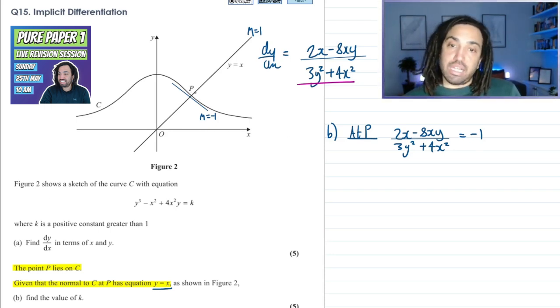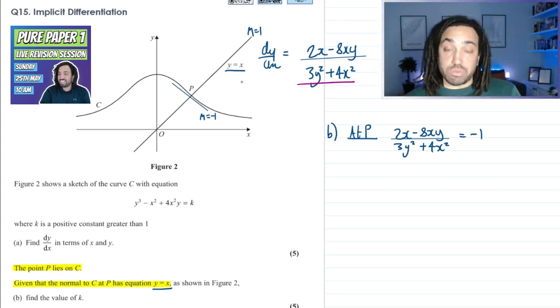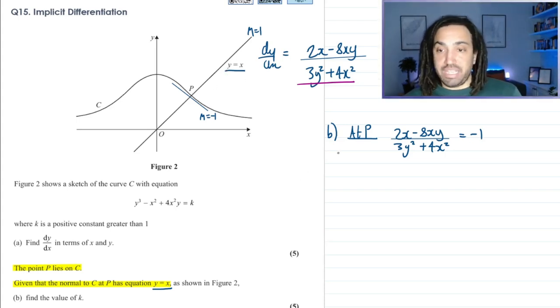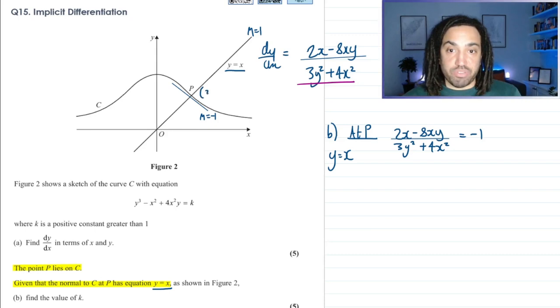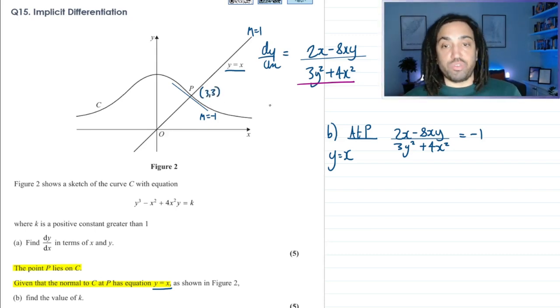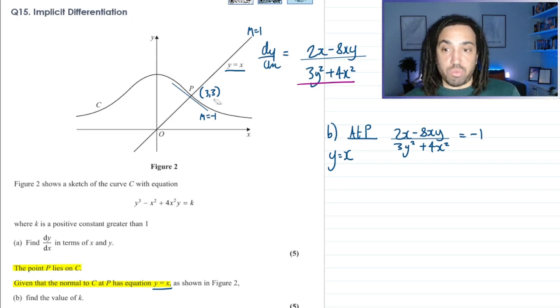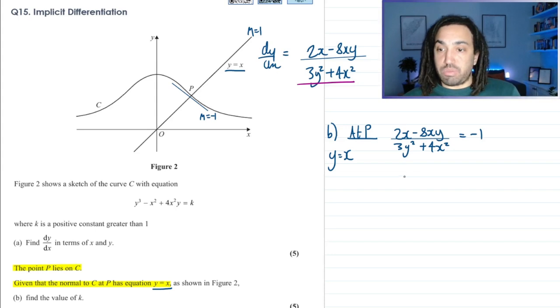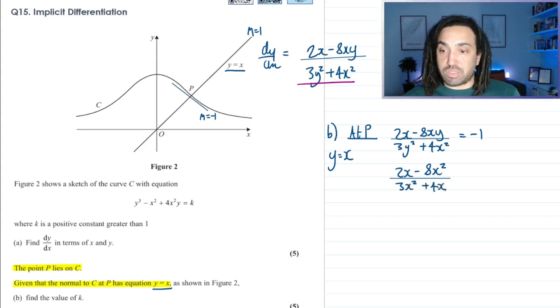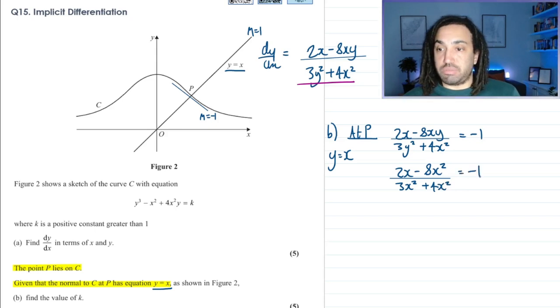So we can say that 2x minus 8xy over 3y squared plus 4x squared should equal minus 1. Okay, what else do we know at p? Well, at p, it's also on the line y equals x, so that means that at p, the y coordinate equals the x coordinate. So whatever p is, it could be 3, 3 or 4, 4 or whatever, but we do know the y equals the x, so we can use that to our benefit. So in fact, what we can do is we can swap out all the y's for x's. So xy becomes x squared. This becomes 3x squared, and then plus 4x squared like so, and that's equal to minus 1.